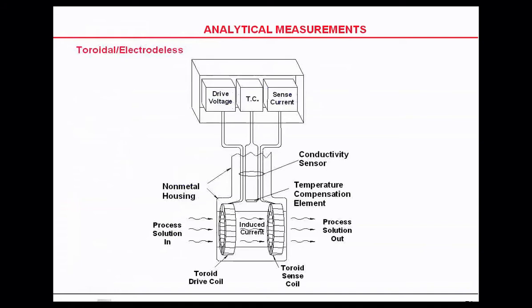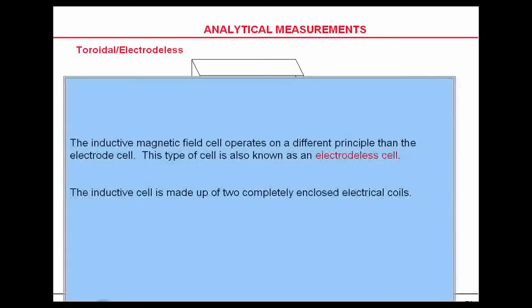Toroidal conductivity is the other way of measuring conductivity. It's generally used for high conductivity or dirty solutions where you can't use the contacting type. You basically have two toroids, one on the left and one on the right. An inductive magnetic field operates on a different principle than the contacting cells.